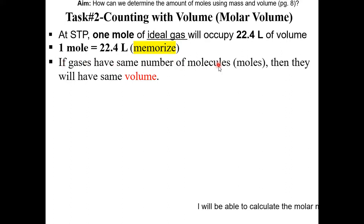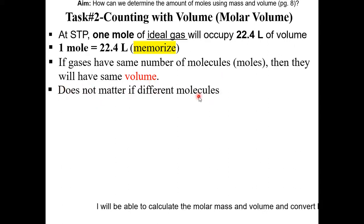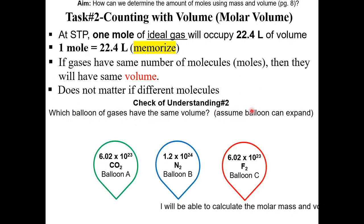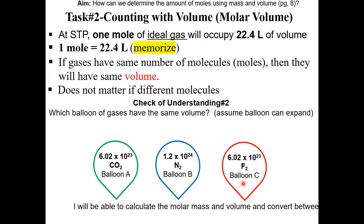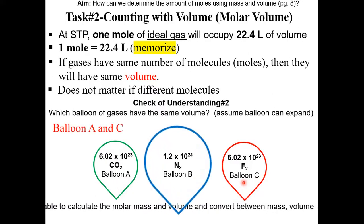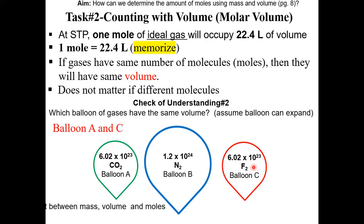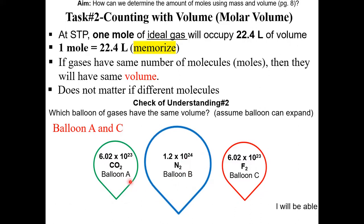If gases have the same number of molecules or moles, they will have the same volume — it does not matter if they are different molecules. Check of understanding number 2: which balloon of gases have the same volume? Assume the balloon can expand. Balloon A and C will have the same volume because they have the same number of molecules — 6.02 × 10²³, which is one mole. Balloon B has two moles of molecules, so we expect balloon B to be double the volume of balloon A and C.